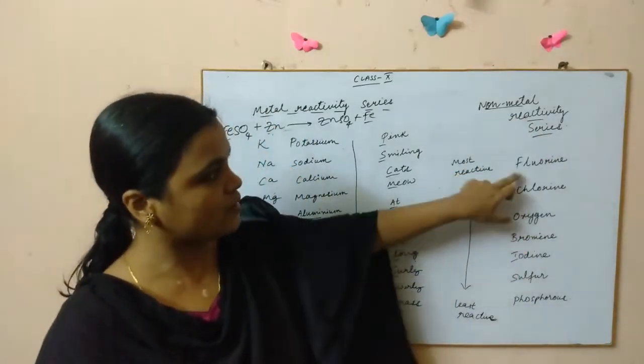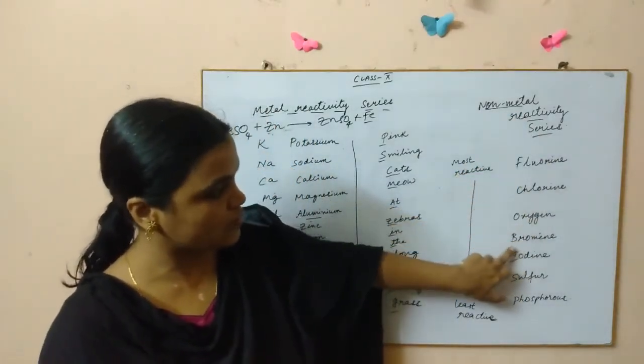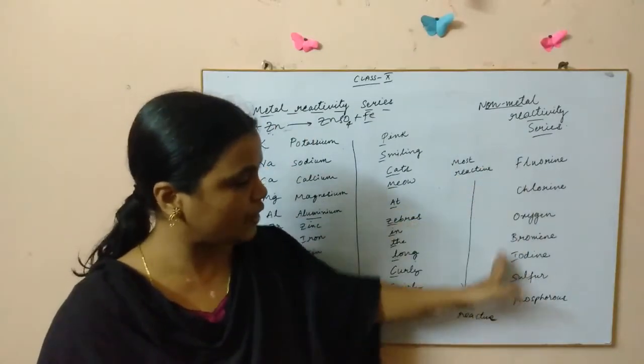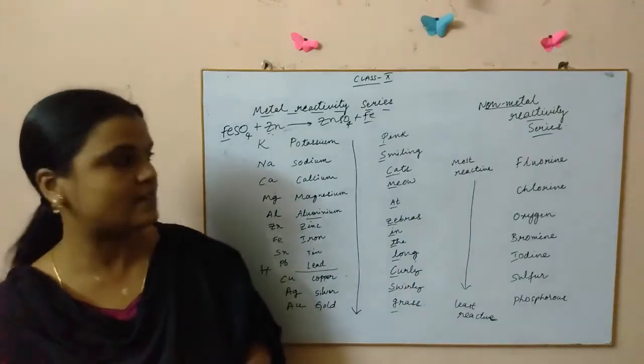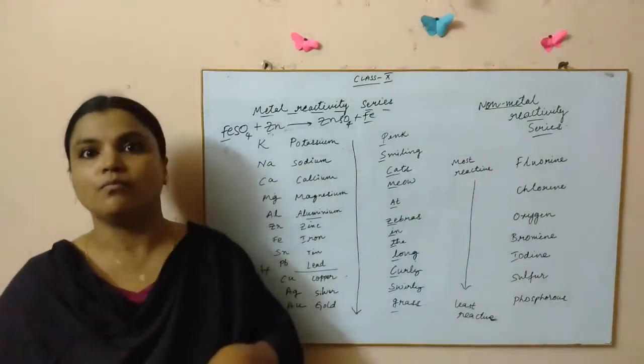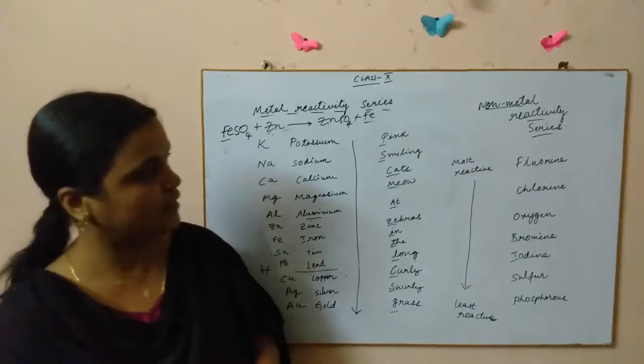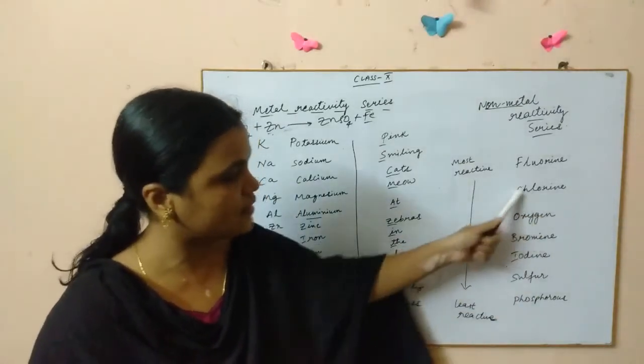So you need to have very importantly this idea. Now coming to the non-metal reactivity series also. Here also you have like fluorine, chlorine, oxygen, bromine, iodine, sulfur and phosphorus. When you go from top to bottom here also the reactivity decreases, fluorine being the most reactive non-metal.